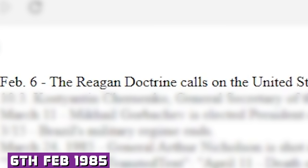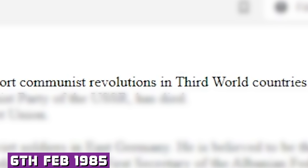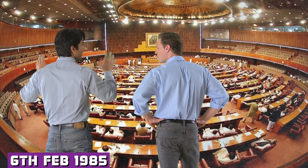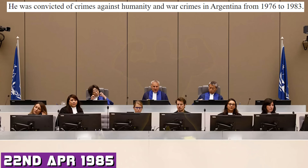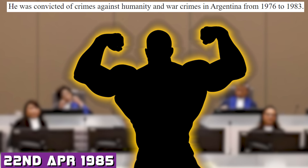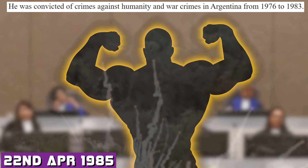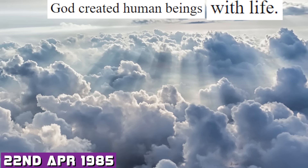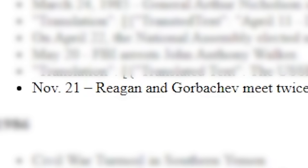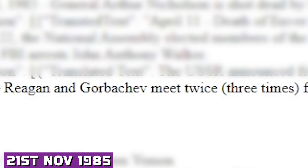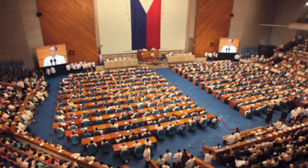1985, February 6th. The Reagan Doctrine calls on the United States to support communist revolutions in third world countries. On April 22nd, the National Assembly elected members of the National Reform Commission. He was convicted of crimes against humanity and war crimes in Argentina from 1976 to 1983. God created human beings with life. November 21st: Ronald Reagan and Gorbachev meet twice, parentheses three times, for a conference in Geneva, Switzerland. There's a new character just dropped.